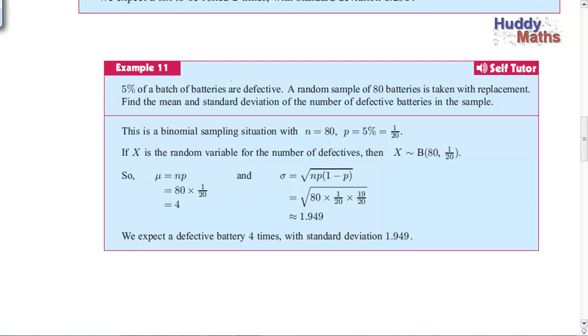What about this one? Five percent of a batch of batteries are defective. A random sample of 80 batteries is taken with replacement. So we're replacing it. Now that's important. Come back to that.